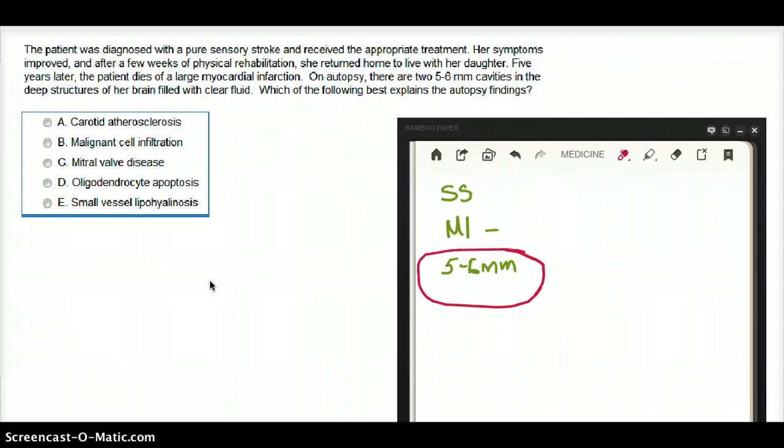The most common cause of about 5mm cavities in the deep structure of brain is lacunar infarcts. And the most common cause of lacunar infarcts is going to be hypertension. And the most common cause of hypertension which leads to lacunar infarcts is really small vessel lipohyalinosis. This is the most common cause.